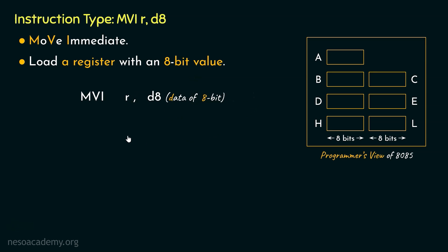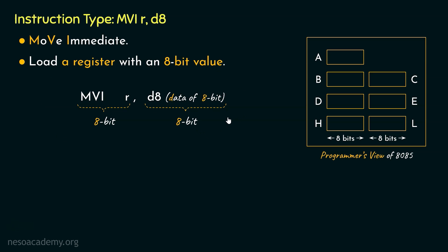Let's now look at the size of this instruction. MVI R is 8 bits and D8 is supposed to be 8 bits. So cumulatively, this entire instruction falls into the category of 2-bytes-long instructions.